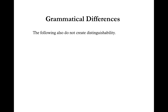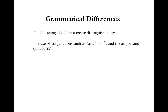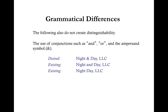The use of conjunctions such as and, or, and the ampersand symbol also do not create distinguishability. If your desired LLC name is Night & Day LLC, and during your search you find Night and Day LLC or Night Day LLC, both of those examples are too similar and your desired LLC name is not distinguishable and therefore not available for use. An example of an alternative name would be Moon and Sunshine LLC.